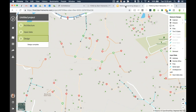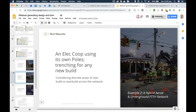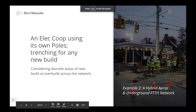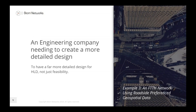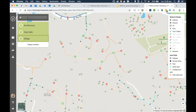Now we're up to the third design scenario — an engineering company needing to create a more detailed design. What I showed earlier with an underground design used street centerlines, which is good for a feasibility study. Customers now want to take this design further for a high-level or even construction design. I'll show how we can do that by modifying the input data to be closer to reality so the design is also closer to reality. I'll name this project 'engineering example.'